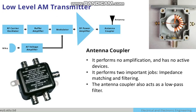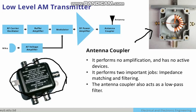The antenna coupler — you have seen the practical internal configuration of the antenna coupler in the left corner. The practical antenna coupler performs no amplification and has no active devices, but it performs two important jobs: impedance matching and filtering. The antenna coupler also adds a low-pass filter that is important for transmission through the antenna.